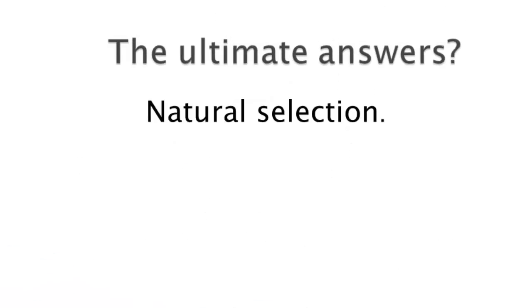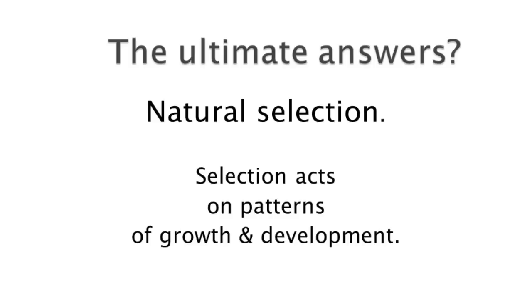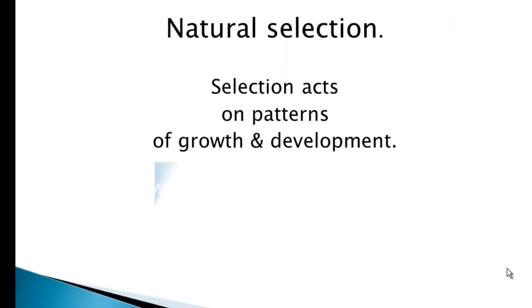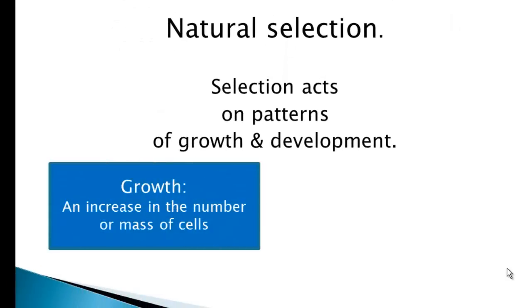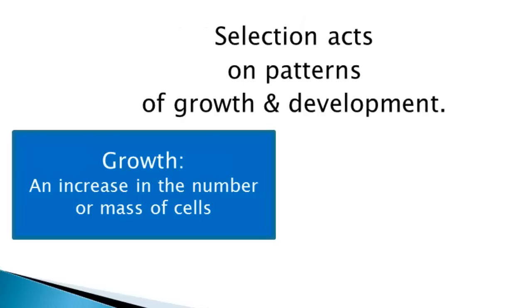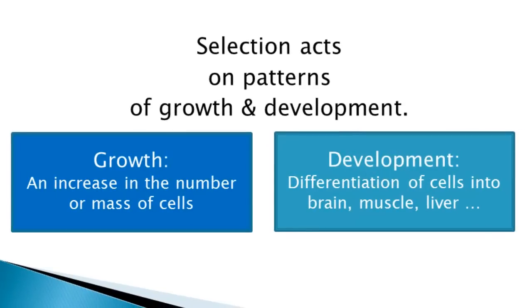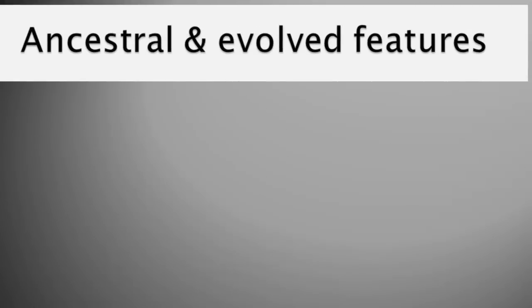The ultimate answers in evolutionary approaches all come down to natural selection. The basic idea is that selection acts on patterns of growth and development, and that selection involves trade-offs between growth and development and reproduction. These are distinct things: growth refers to an increase in the number or mass of cells — some cells like muscle cells can get larger. Development, on the other hand, is about the differentiation of cells into different kinds of tissues that form our brains, muscles, livers, and other organs. Reproduction is something different from both, but very closely related. We can divide our features into what are called ancestral and evolved features.